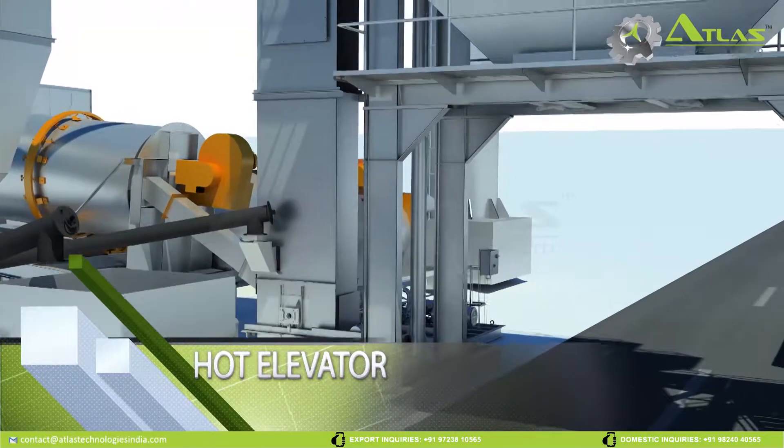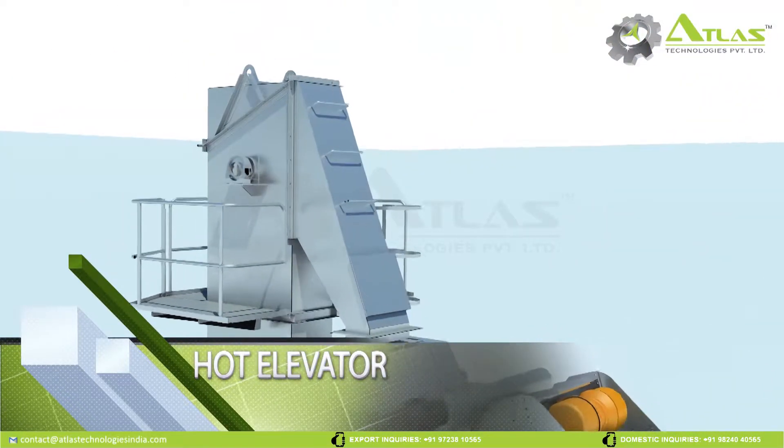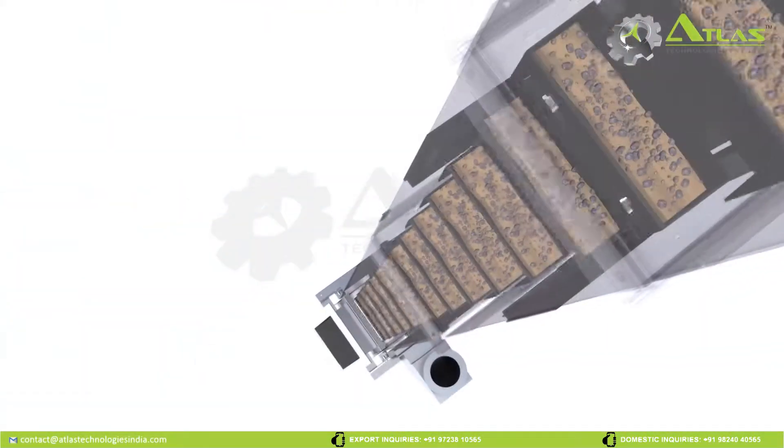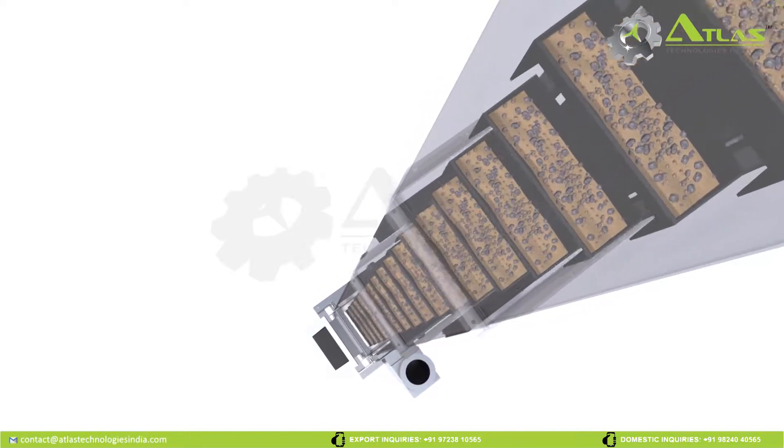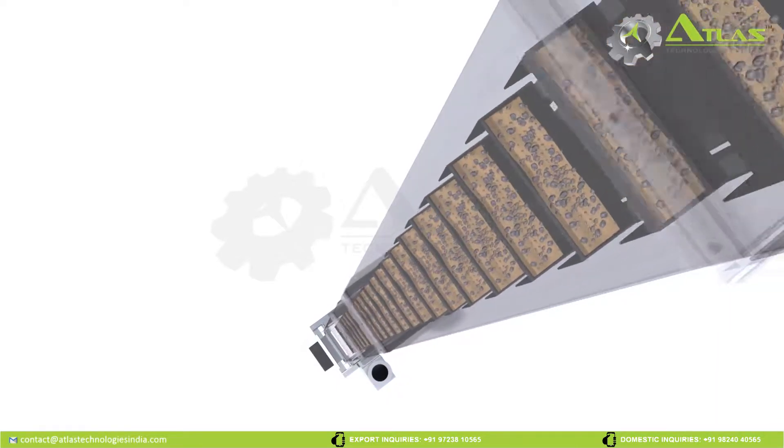Hot Elevator. After hot aggregates get discharged out of dryer, they are elevated and carried into the screen by the bucket elevator.